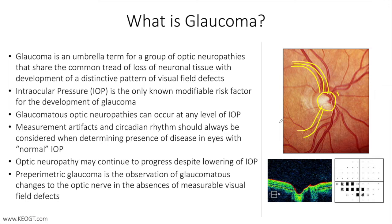We also utilize optical coherence tomography, or OCT, to objectively measure the thickness of the retinal nerve fiber layer as well as many features of the nerve including size and neuroretinal rim. You can see an example of OCT here at the bottom. I'll outline the retinal nerve fiber layer — this is the optic nerve, and you can see the cup of the optic nerve here, and these are vessels.